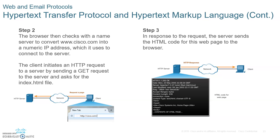Step three: you take that IP address as a destination and go there. The DNS server looks up the name for you and gives you the IP address. Step four: once you have that IP address, the client sends HTTP commands to that IP address, where the server should be running the World Wide Web.